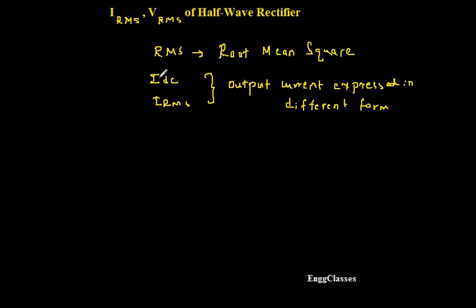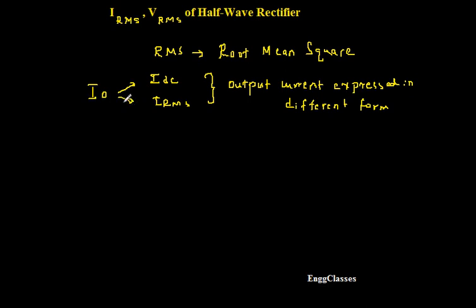If I have found only IDC, I am not able to find the efficiency. If I have found only IRMS, I am not able to find the other parameter, ripple factor. So the output current, instead of saying I-naught, can be expressed in different ways so that I can find the important parameters later.